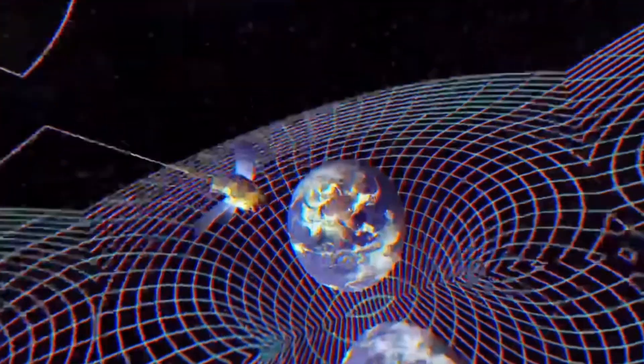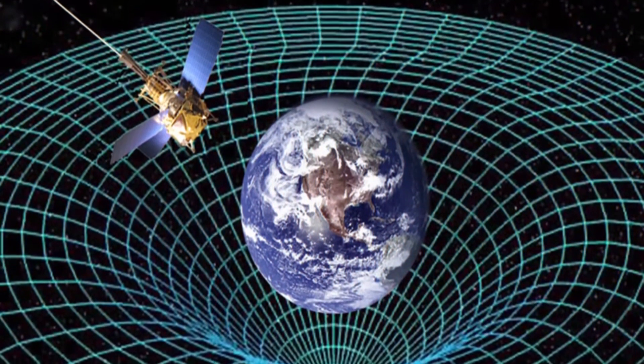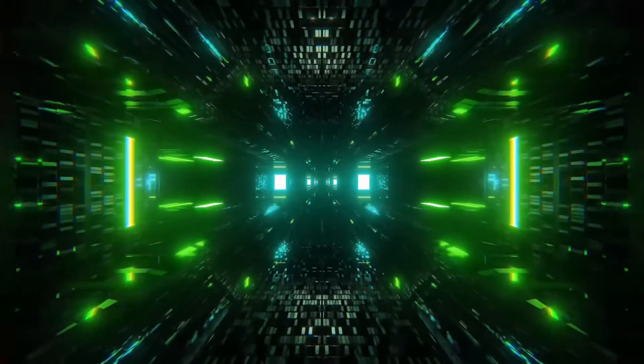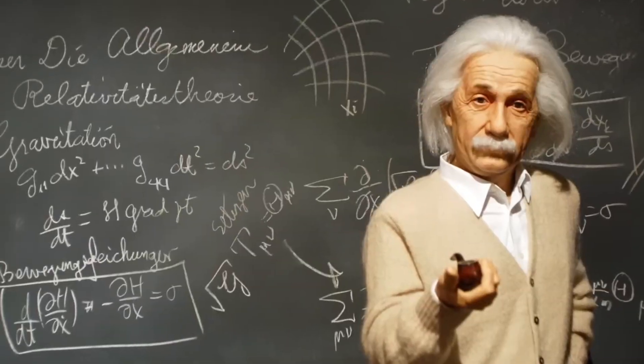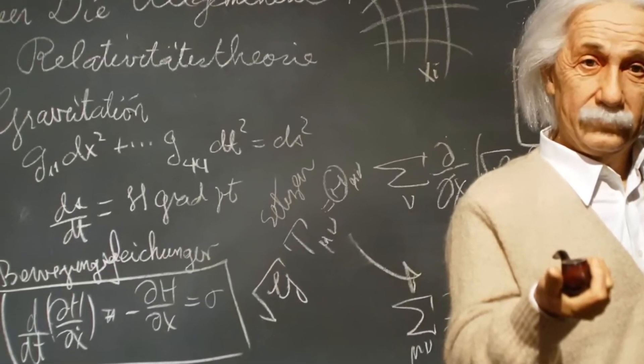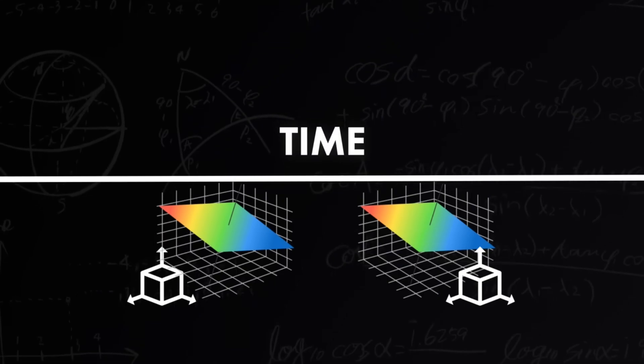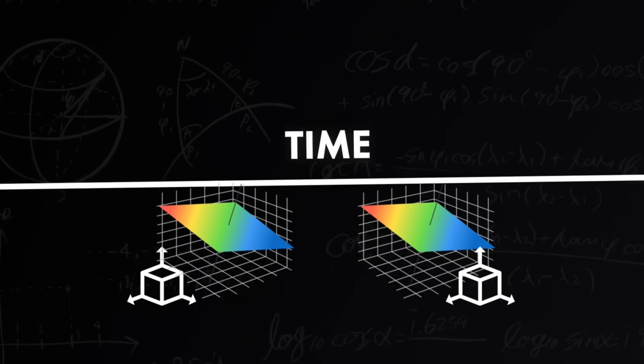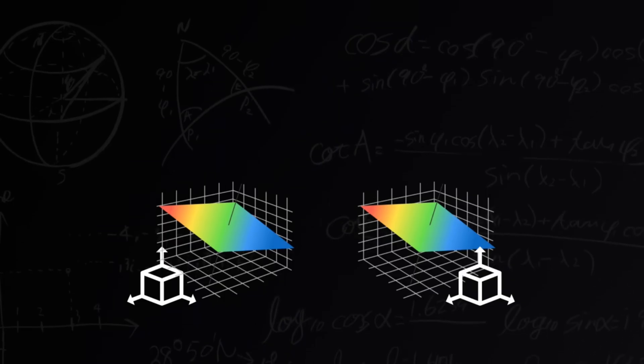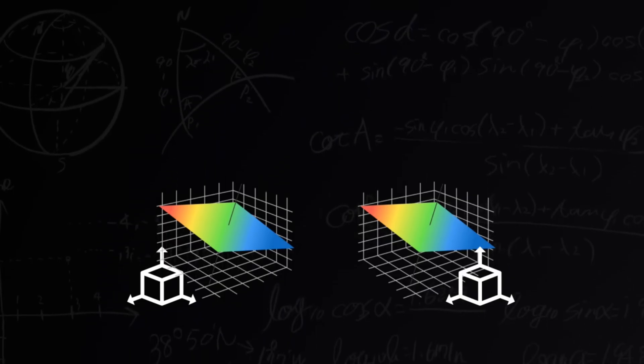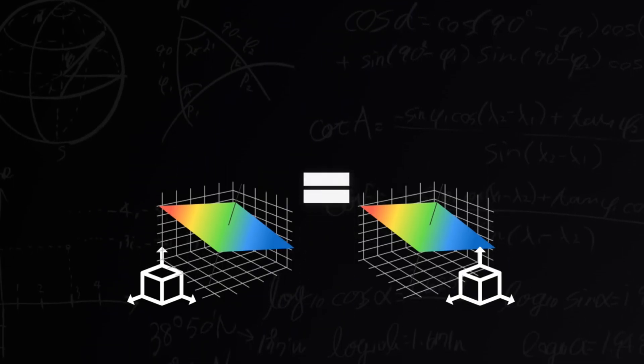Once people began to approach questions scientifically, they could make new discoveries faster and more reliably than ever before. The result was a knowledge engine that became self-sustaining. With each new discovery, scientists could refine their methods, ask better questions, and make even more significant discoveries. In a way, science supercharged our ability to accumulate knowledge, making each generation's discoveries a foundation for the next.